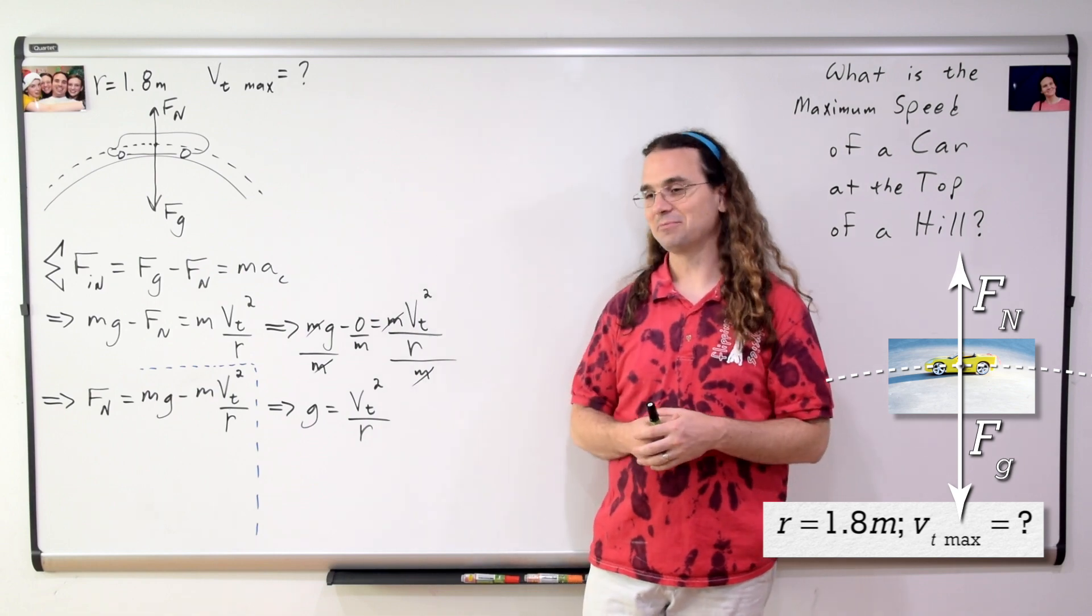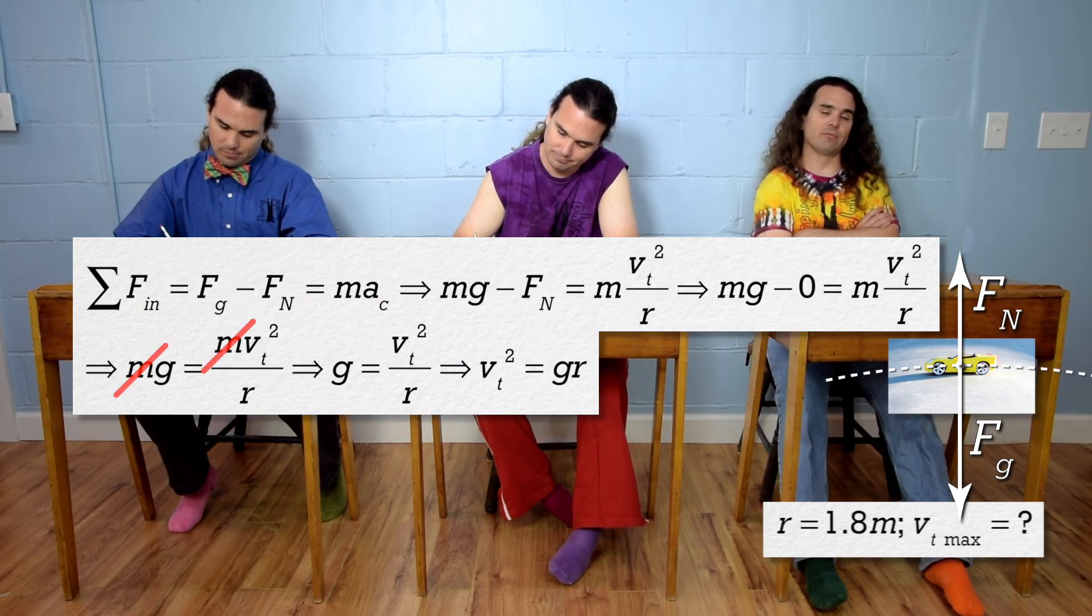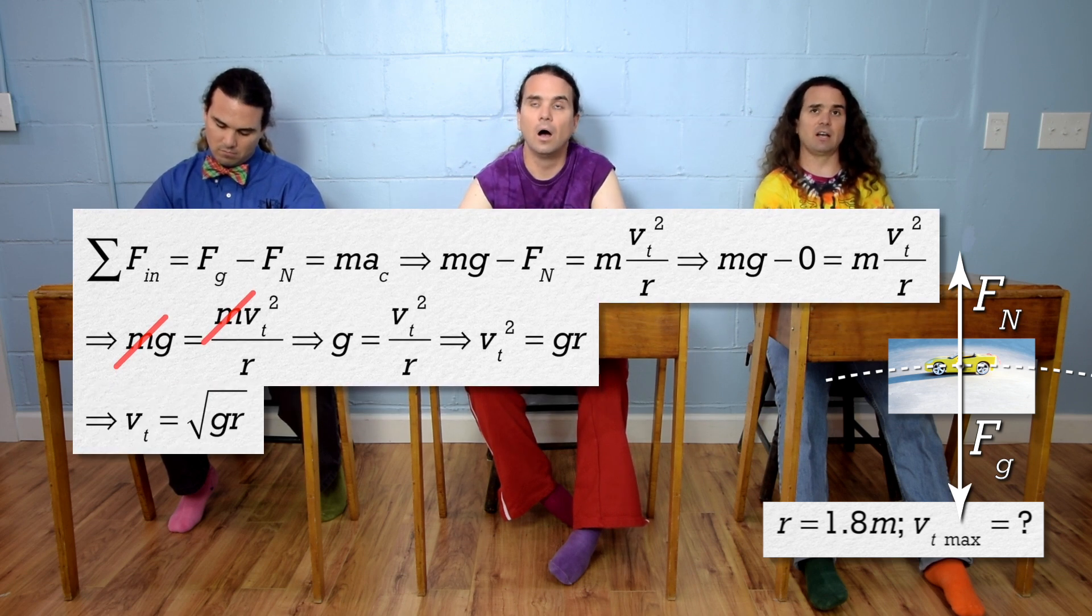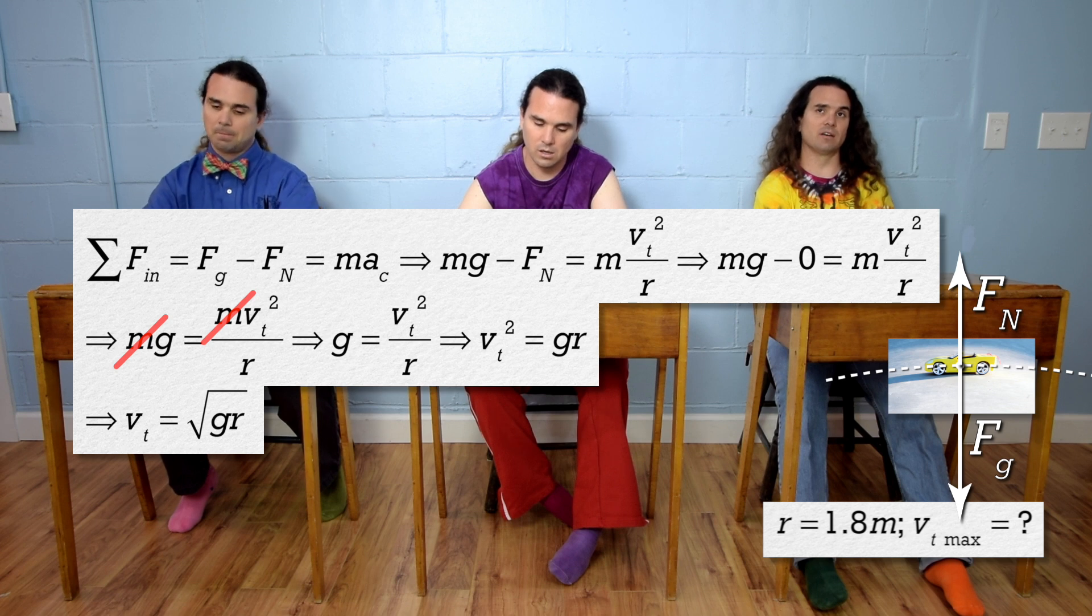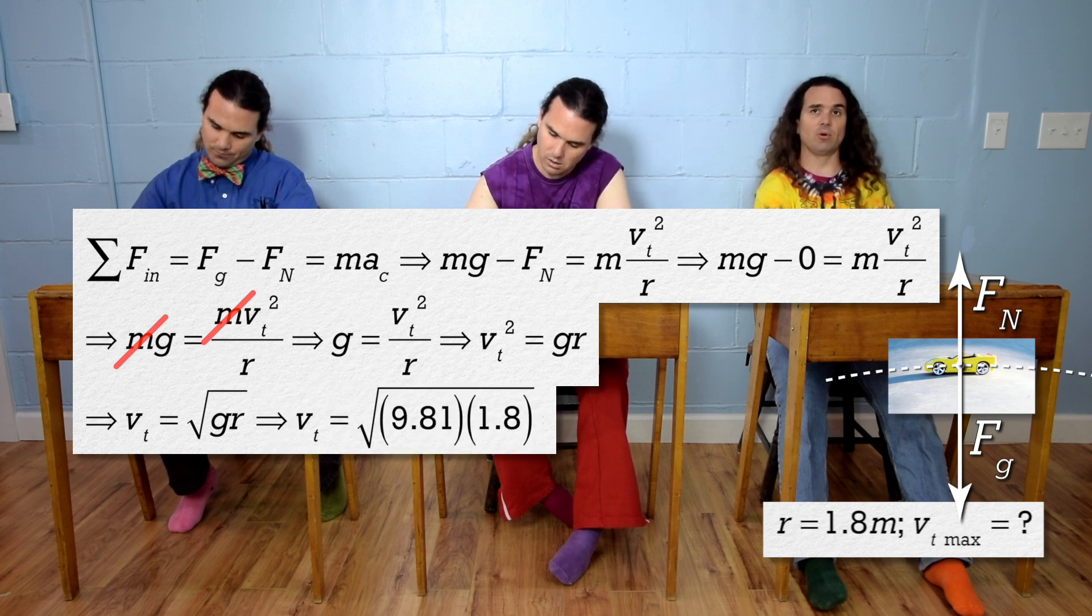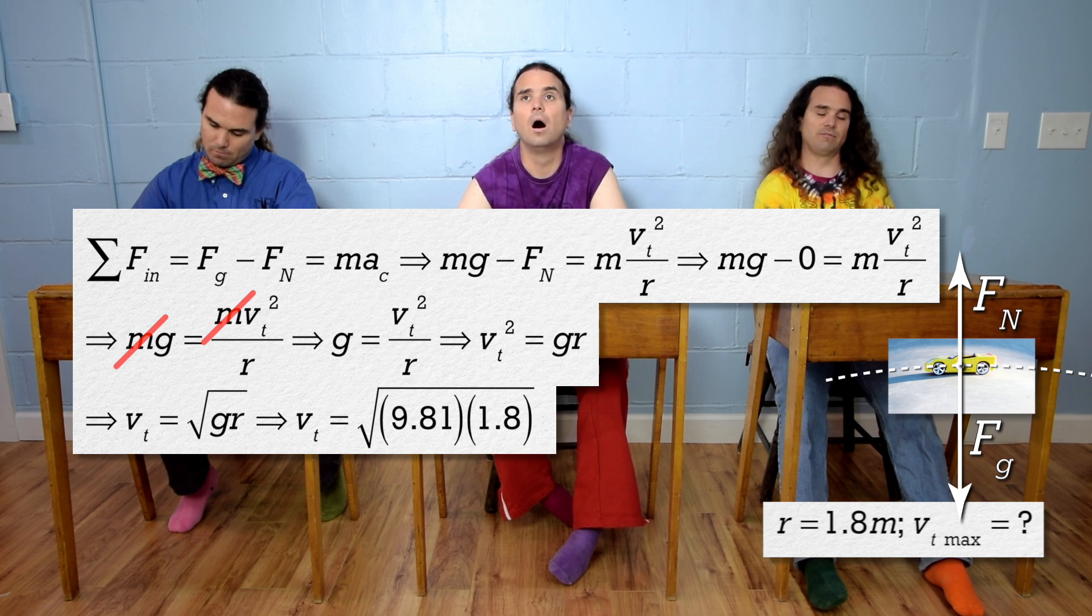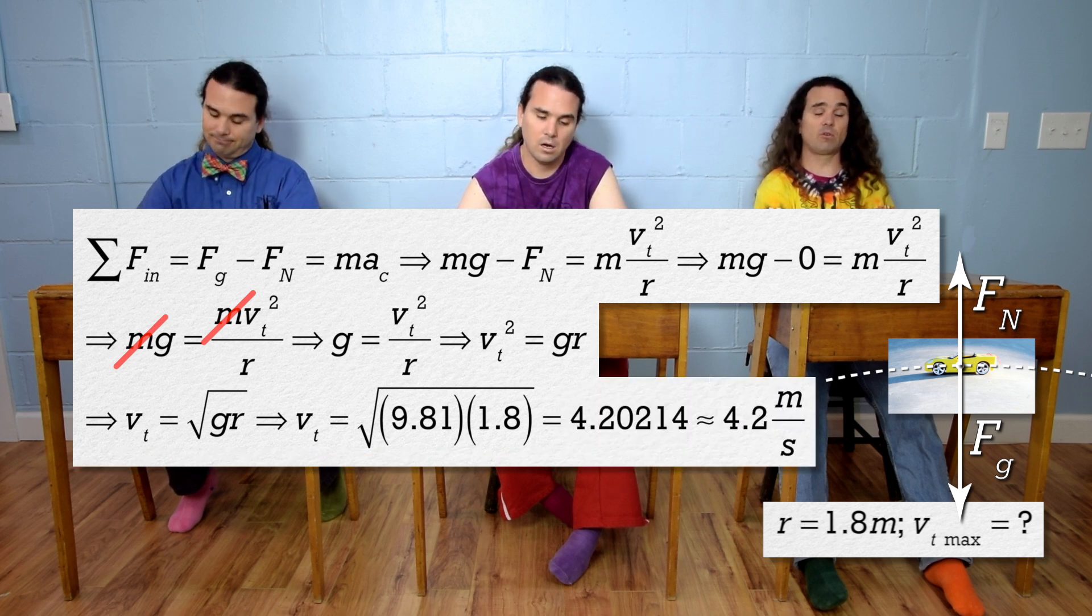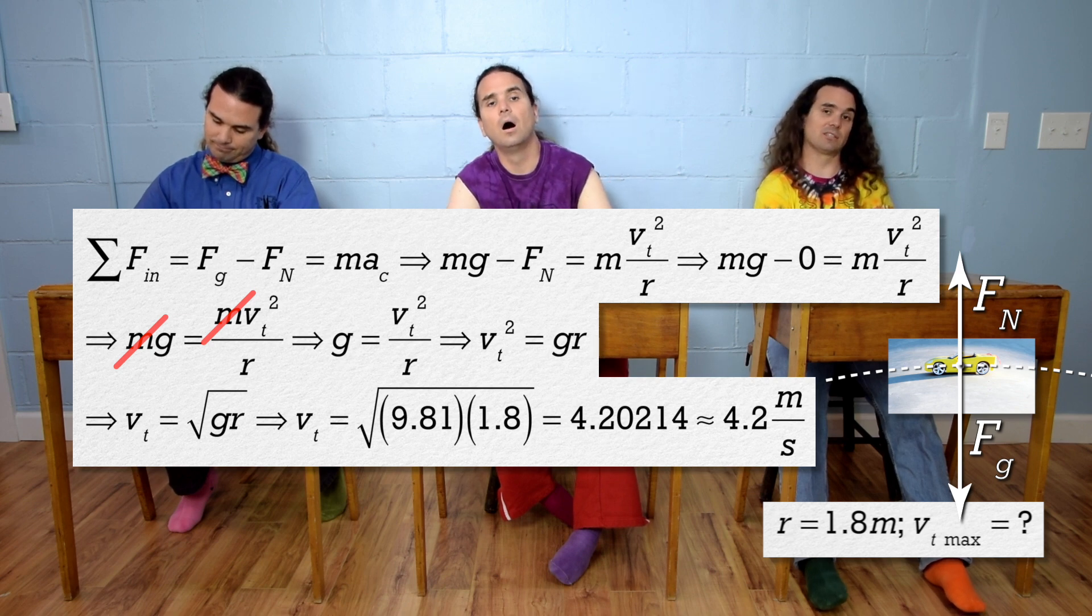Bo, please continue. Multiply both sides by the radius, and then take the square root of the whole equation to get tangential velocity equals the square root of the acceleration due to gravity times the radius of the hill, which is the square root of 9.81 times 1.8, or 4.20214, or 4.2 meters per second with two significant digits.